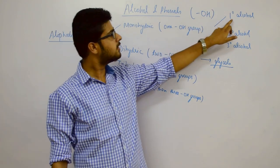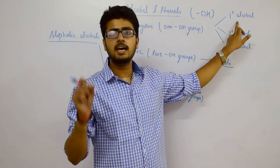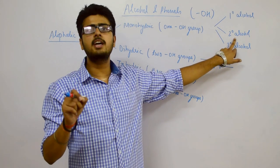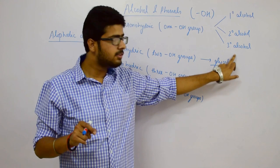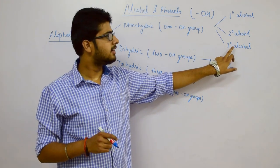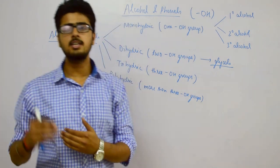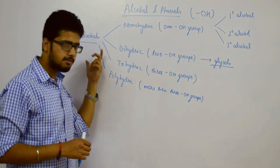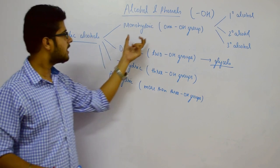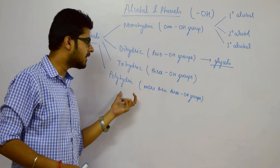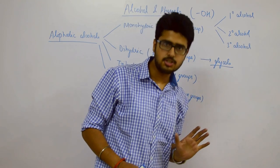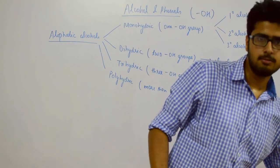Primary alcohol means the OH group is attached to the primary carbon atom. Secondary alcohol means the OH group is attached to the secondary carbon atom. Tertiary alcohol means the OH group is attached to the tertiary carbon atom. This is the classification of monohydric aliphatic alcohols.